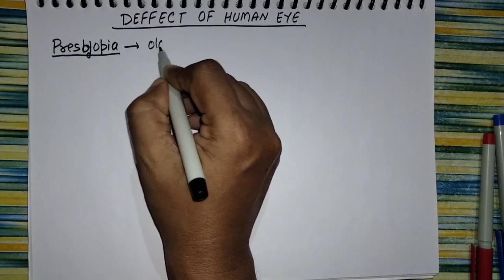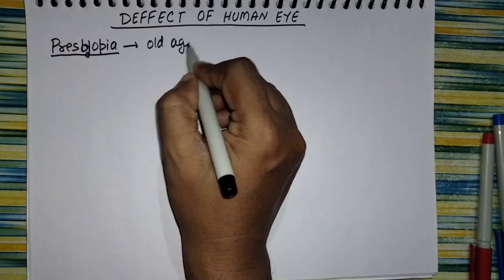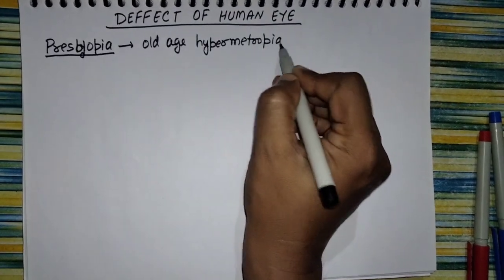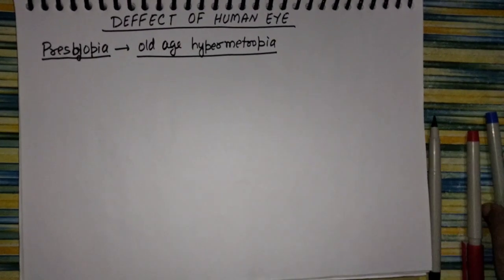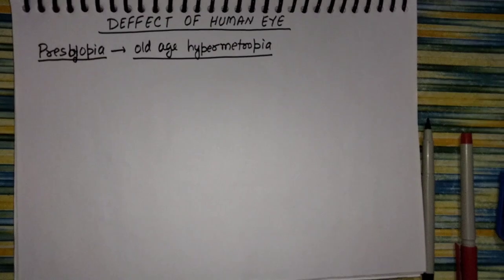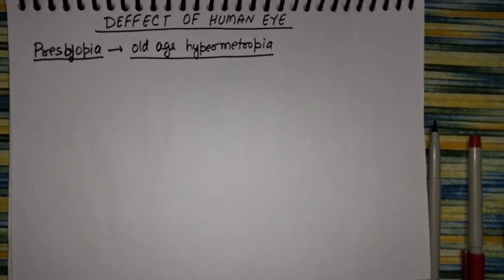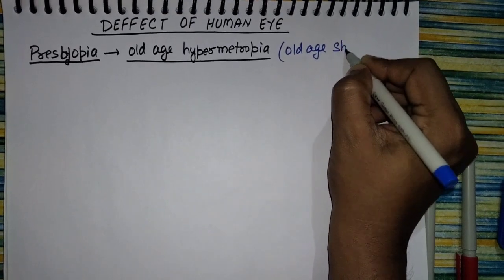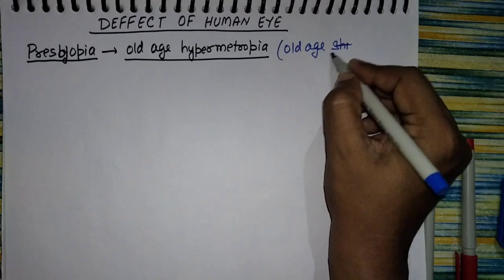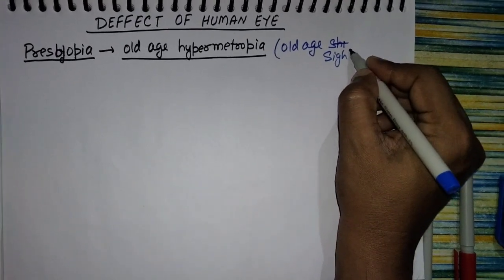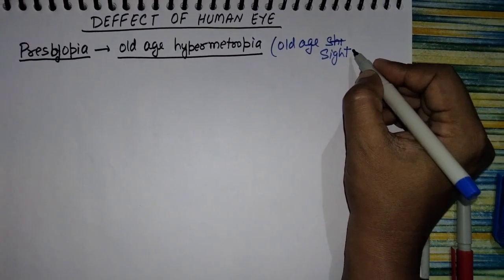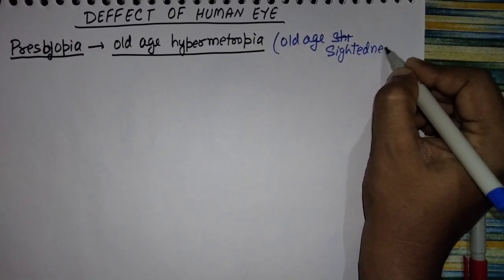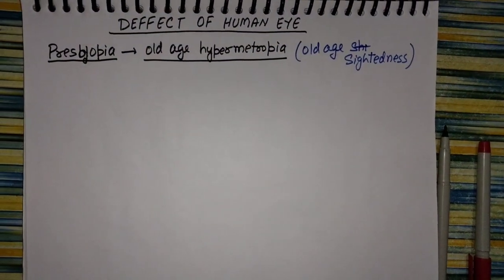Presbyopia is called old age hypermetropia. It is also called old age sightedness. What does old age sightedness mean?